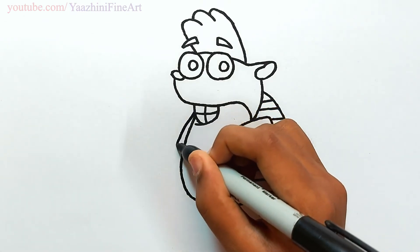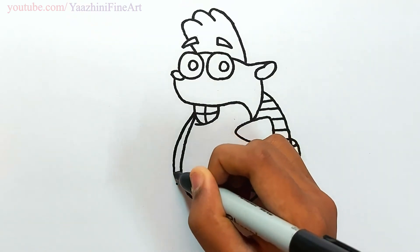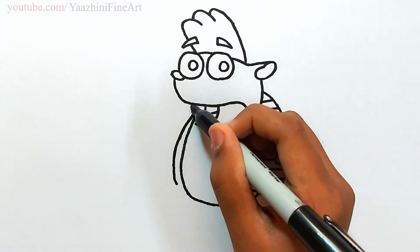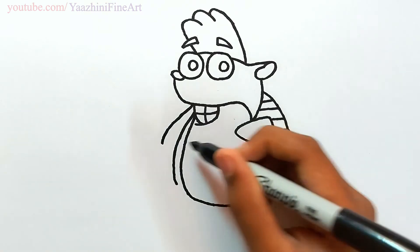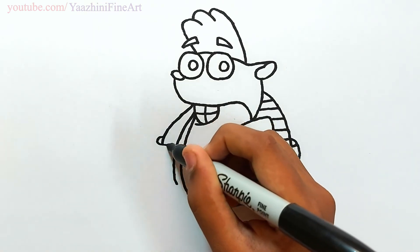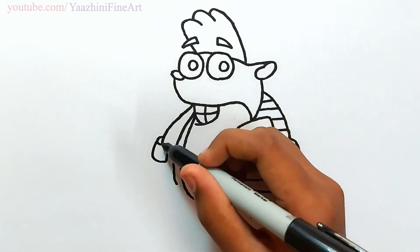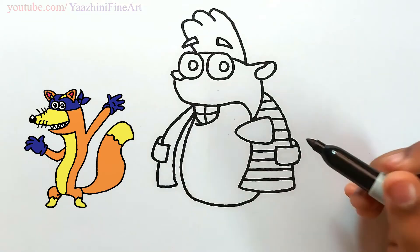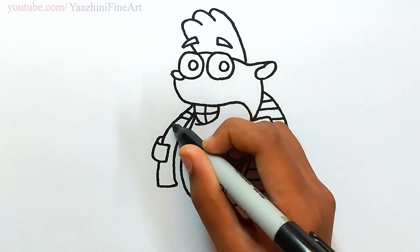Draw another part of the shirt. Keep point, keep point, join it. Draw another line. Draw a pocket. Continue to draw the pocket. Continue to draw his shirt and then join it. Draw the same lines inside.